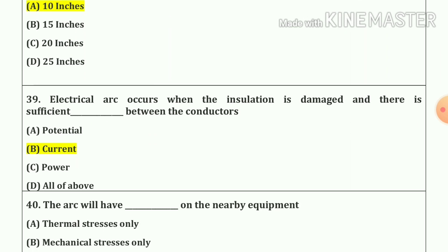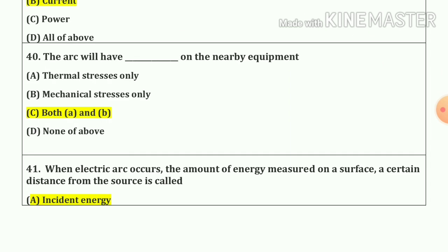Question number 38. An air termination should exceed a minimum of 10 inches above the object that is to be protected. Question number 39. Electrical arc occurs when the insulation is damaged and there is sufficient current between the conductors. Our answer is option B. Question number 40. The arc will have both thermal stress and mechanical stress on the nearby equipment. Our answer is option C — both A and B.